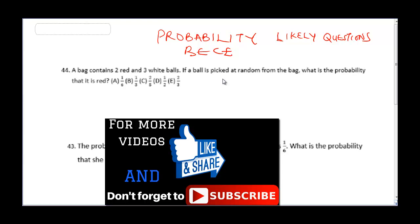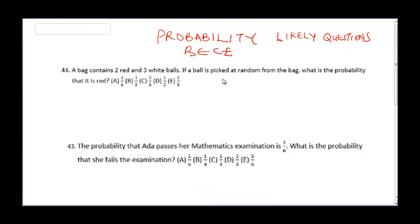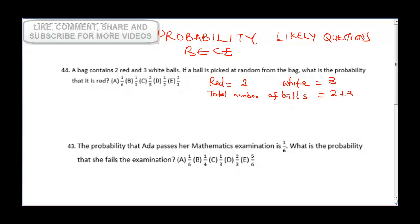The first question says: a bag contains two red and three white balls. If a ball is picked at random from the bag, what is the probability that it is red? How many red balls do we have? We have two red. How many white balls? We have three white. The total number of balls is two plus three, which gives us a total of five balls.